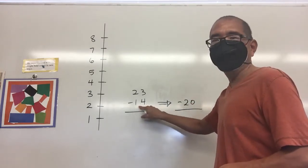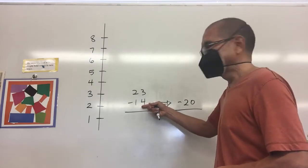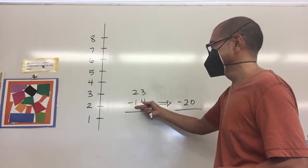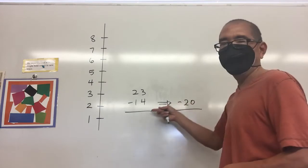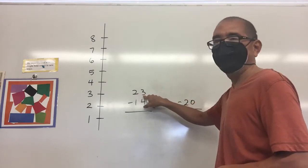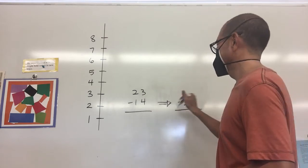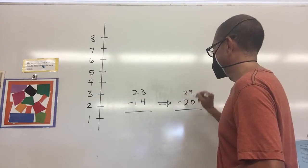So minus 14 becomes minus 20. How much did I shift up to go from 14 to 20? Well that's six spaces. So then I'm going to take 23 and shift it up six spaces, so that will be 29.